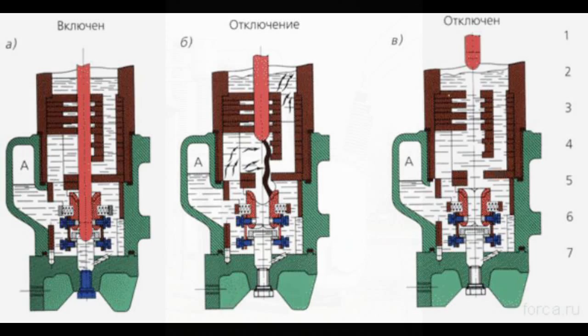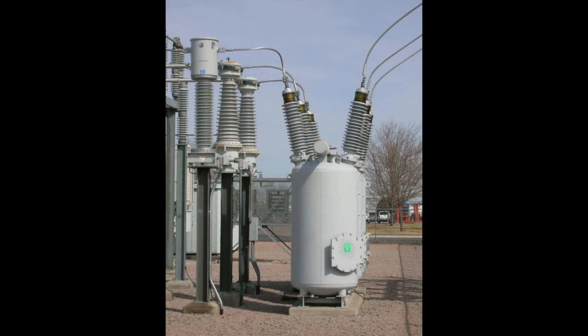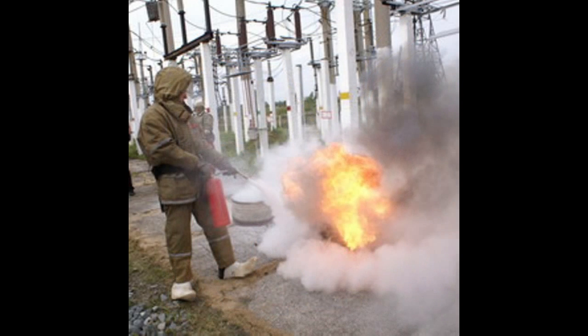Tank type circuit breakers have the following advantages: their design is simple and their circuit breakability is very high. The disadvantages include the large size, large volume of oil in the tanks, as well as the risk of explosion or fire.